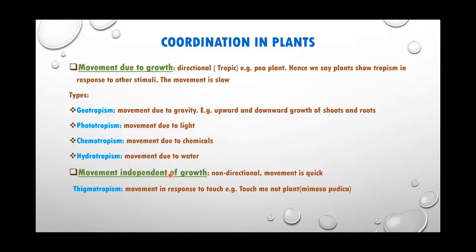Movement due to growth is directional — called tropic movement. The environmental stimulus, whether sunlight, touch, or water, causes the plant to move towards or away from it. If the plant moves towards the stimulus, we call it positive; if it moves away, it is negative. Plants show tropism in response to environmental stimuli. Tropism is nothing but directional movement — the environment provides a trigger for the plant to respond.